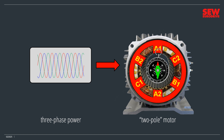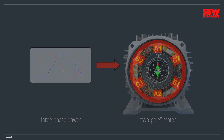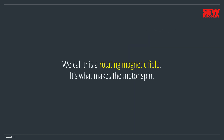When those three power supplies energize the motor's three coils, three separate magnetic fields form inside the stator. They mix and match, add and subtract, forming a single combined field that points in a specific direction. If you put a compass inside the stator, its needle will align with that magnetic field and show where it's pointing. As the power supplies cycle through their sine waves, the combined magnetic field constantly changes where it points, making the compass needle spin. We call this a rotating magnetic field – and it's what makes the motor spin.